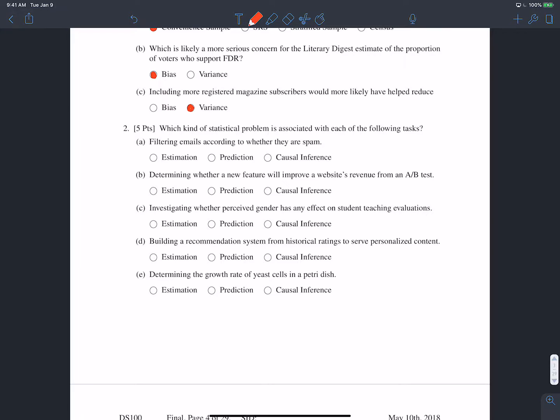As I already mentioned, the problem of filtering emails according to whether or not they are spam is a prediction problem. Determining whether a new feature will improve a website's revenue from an AB test, that's causal inference. So that's determining the impact that changing one variable has on another.